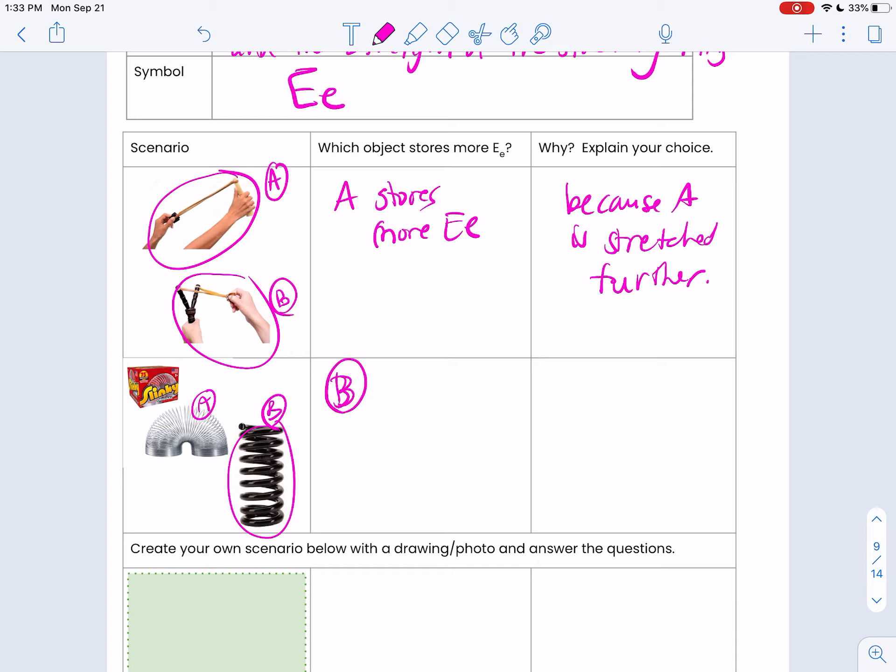So in this case, B would store more, because B is a stronger spring. It's harder to stretch or compress that, which means that it's going to store more energy. And you're going to create your own.